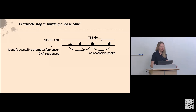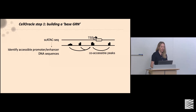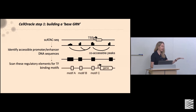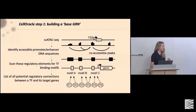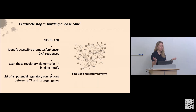In step one of Cell Oracle, we build a base gene regulatory network. Many classical GRN approaches produce these chaotic hairballs where transcription factors interact with all other genes. What Kenji decided was to take single-cell ATAC-seq data and build a base GRN representing all biologically feasible connections. From the scATAC-seq data using Cicero, we identify accessible promoter-enhancer DNA sequences, scan these regulatory elements for transcription factor binding motifs, and produce a list of all potential regulatory connections. This was inspired by SCENIC. We now have base GRNs for at least 10 different species, growing with frequent requests on GitHub.